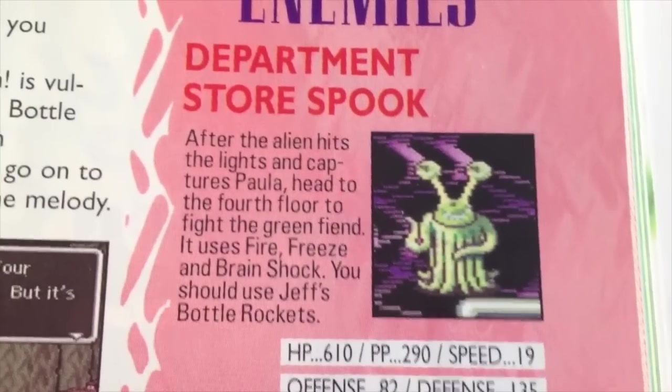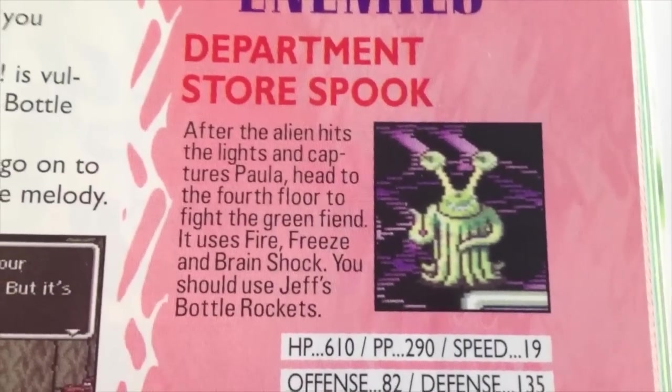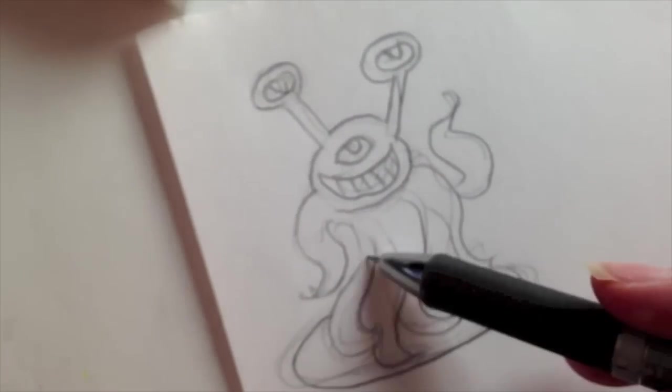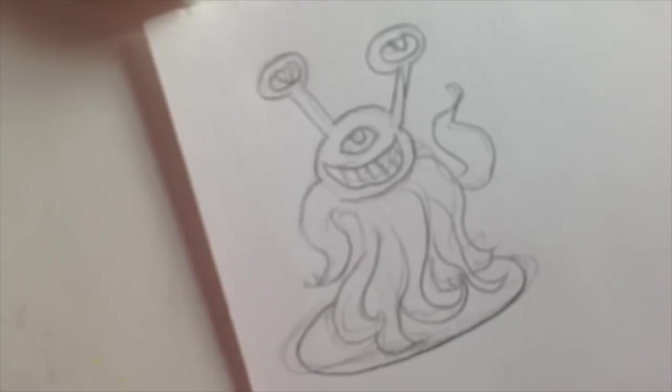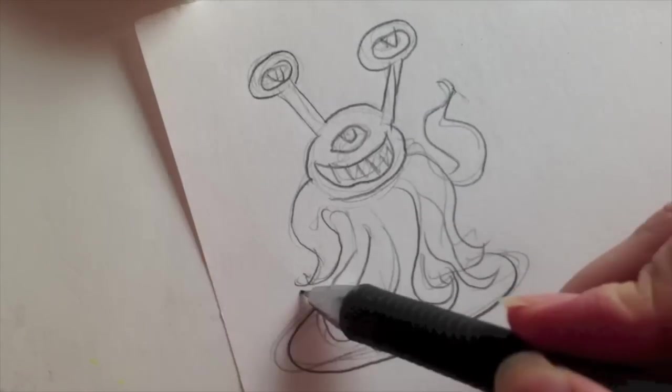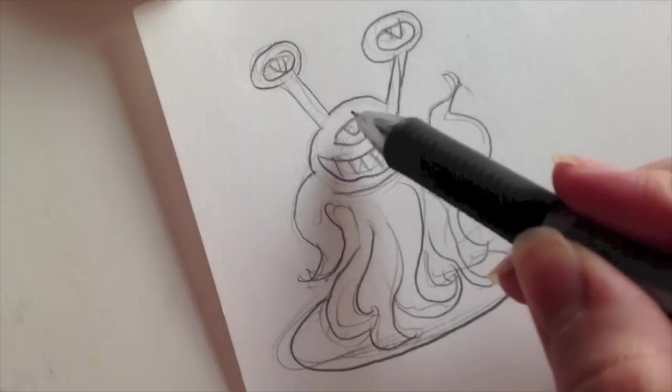I'm going to show you how to step-by-step make a department store alien. So here is my embarrassingly bad sketch. I'll show you what I plan to do. So he's got a base, and he might be holding a microphone and a ray gun, but I haven't decided yet.